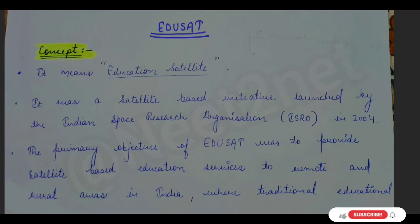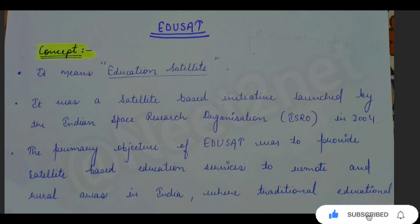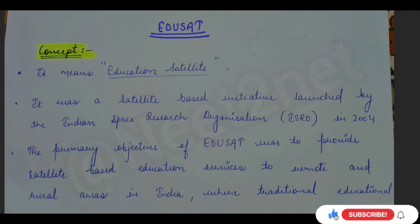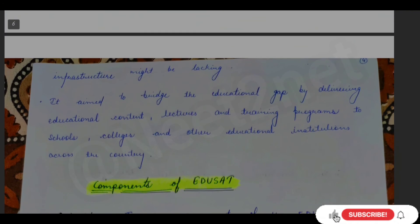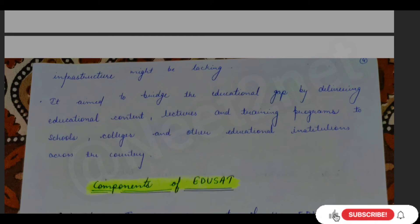Now let's talk about EDUSAT. EDUSAT is a satellite established by the Indian Space Research Organization (ISRO). Its primary objective was to provide education to children who are deprived or living in remote or rural areas where educational infrastructure like schools is not available, so that the educational gap can be bridged through satellite-based learning. It provides lectures and training programs to such areas.